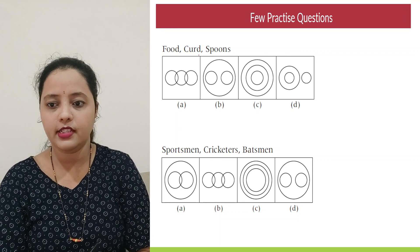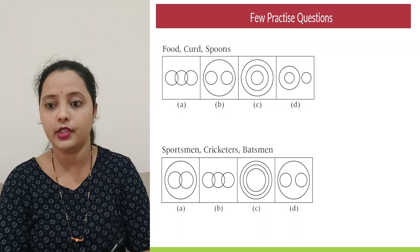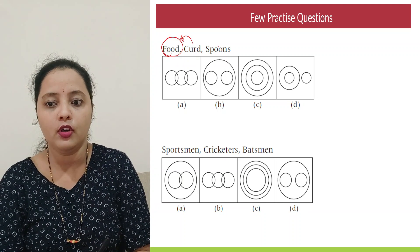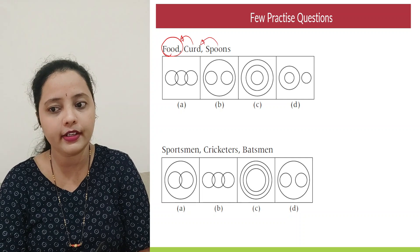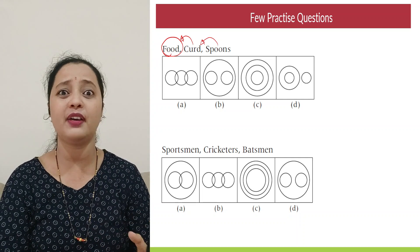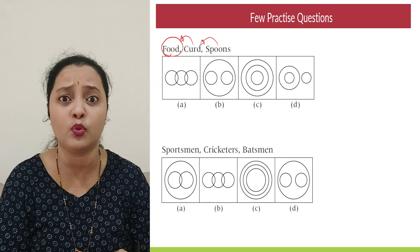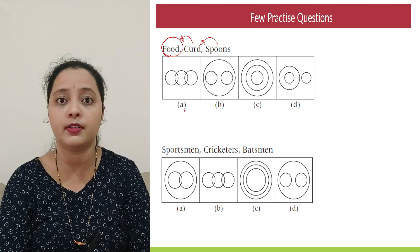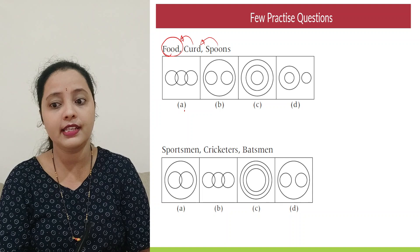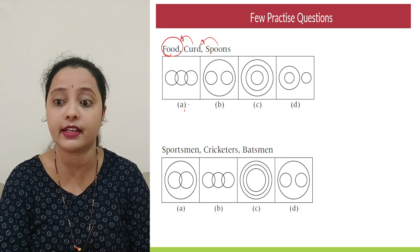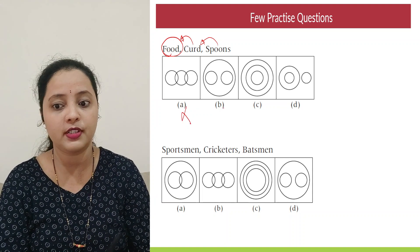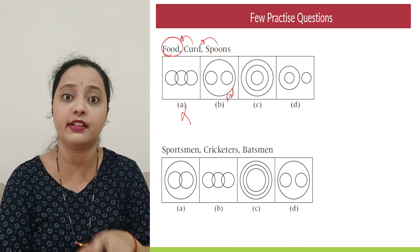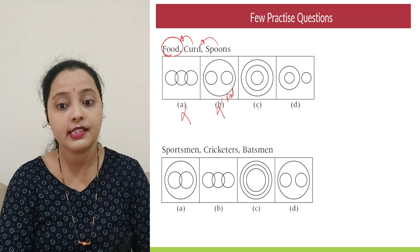So the question says food, curd and spoon. Now what is the major element in this? Food. And curd is a type of food. Though spoon is used to eat types of food. Does every type of food we eat with a spoon? No. So keep that in mind in checking with the option. So is A option possible? Impossible. Curd has to lie inside what? It has to lie inside food. So A option not possible. For B option, if food is a major element, will spoon lie inside food? Is it a type of food? No. Impossible.